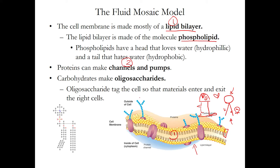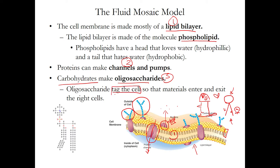Number two, the cell membrane is also made out of these little pink jelly bean things — these are all proteins. These proteins can be channels, like a tunnel for materials to go through, or they can be pumps that use ATP to pump things against the concentration gradient. And then number three, oligosaccharides or carbohydrate chains — the sugary chains. These blue guys are sugar chains and their job is to tag the cell so that you know what cells belong to you. So the three parts of the cell membrane are: the lipid bilayer, the protein channels and pumps, and the sugar oligosaccharides — the carbohydrate chains. Those are synonymous terms for us.